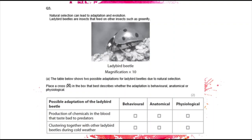Question three. Natural selection can lead to adaptation and evolution — something we'll look at next lesson. Ladybird beetles feed on other insects such as greenfly. The table shows two possible adaptations: the production of chemicals in the blood that taste bad to predators — that is physiological — and clustering together with other ladybird beetles during cold weather — that is behavioral.